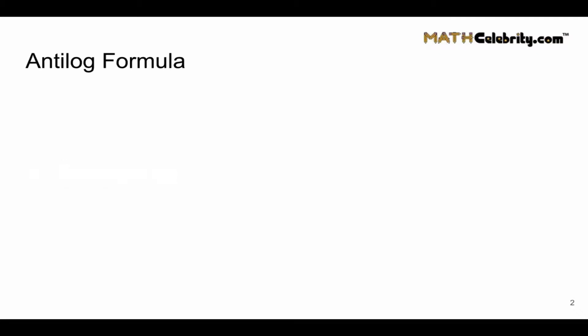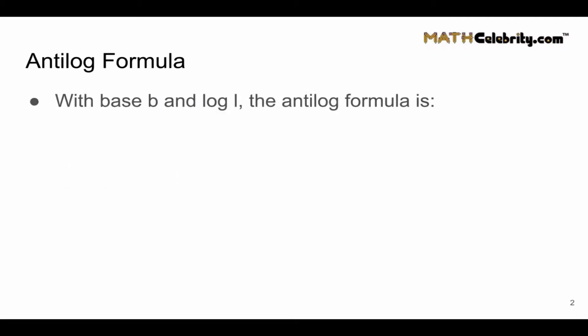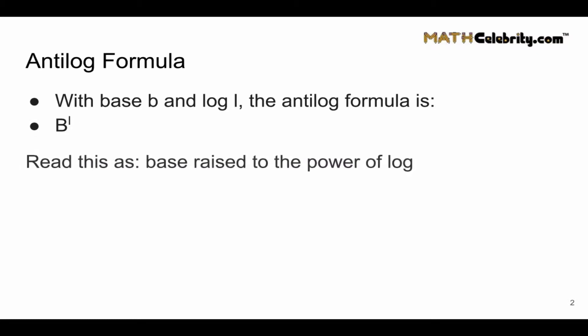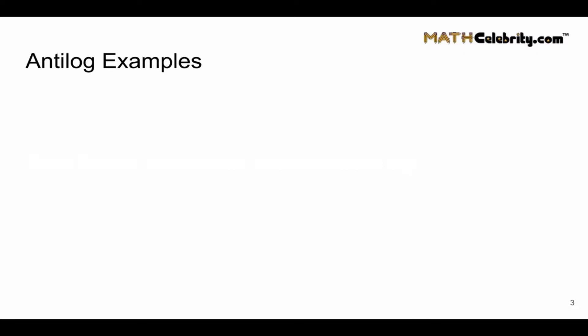What is the antilog formula? Given a base b and a log l, the antilog formula is b — the base — raised to the l — the logarithm. You can read this as the base raised to the power of the log, and that is how you calculate an antilogarithm.